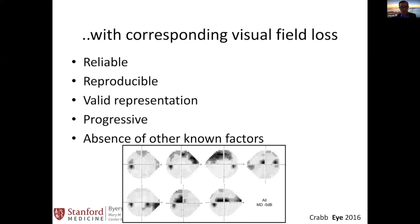One problem we see in the glaucoma field and in research is that different patterns of visual field loss can have similar mean deviation values. Even though different areas of the nerve may be affected, seven different visual fields can all show similar mean deviation loss but have very different patterns and areas affected. This contributes to the difficulty in diagnosing glaucoma on top of ODD.